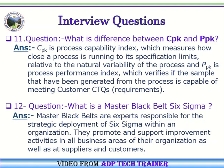Question Number 11: What is the difference between CPK and PPK? Answer: CPK is Process Capability Index, which measures how close a process is running to its specification limits relative to the natural variability of the process. PPK is Process Performance Index, which verifies if the sample generated from the process is capable of meeting customer CTQ requirements.